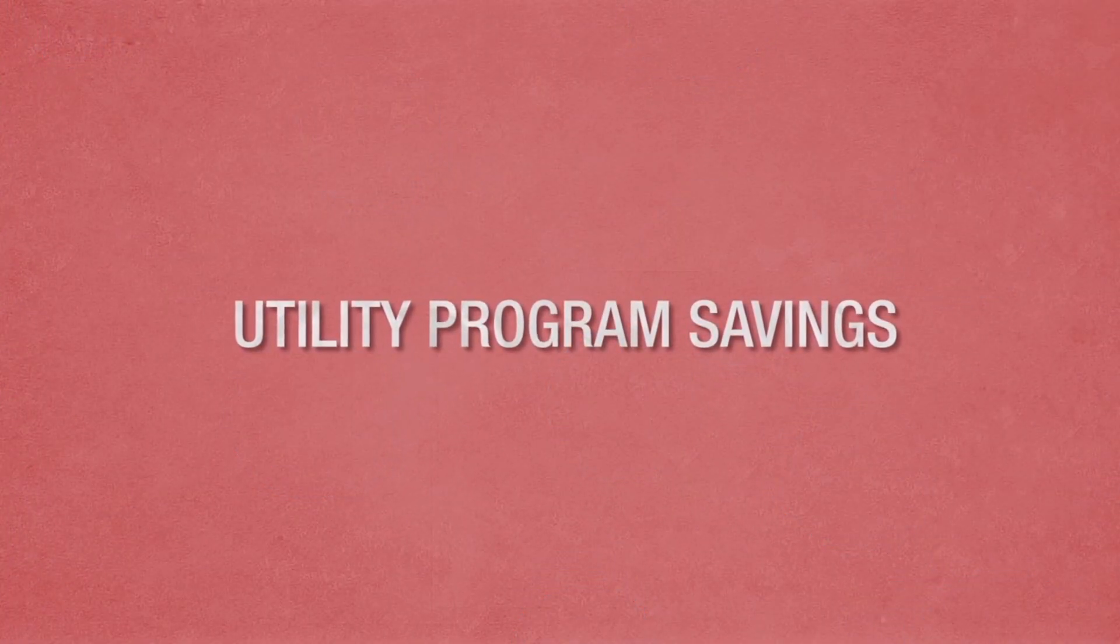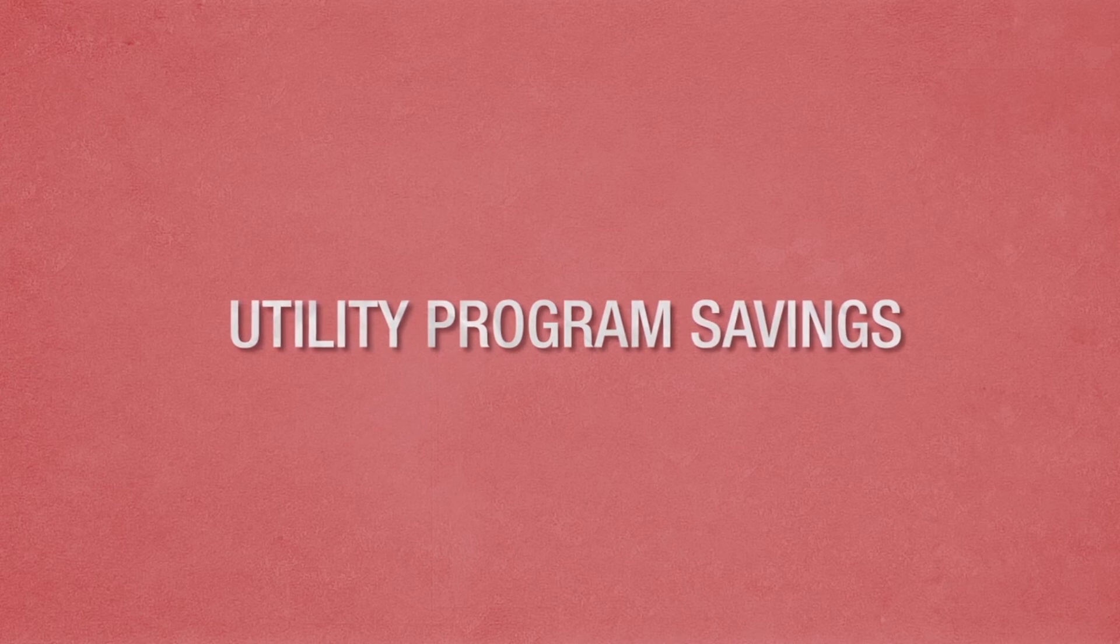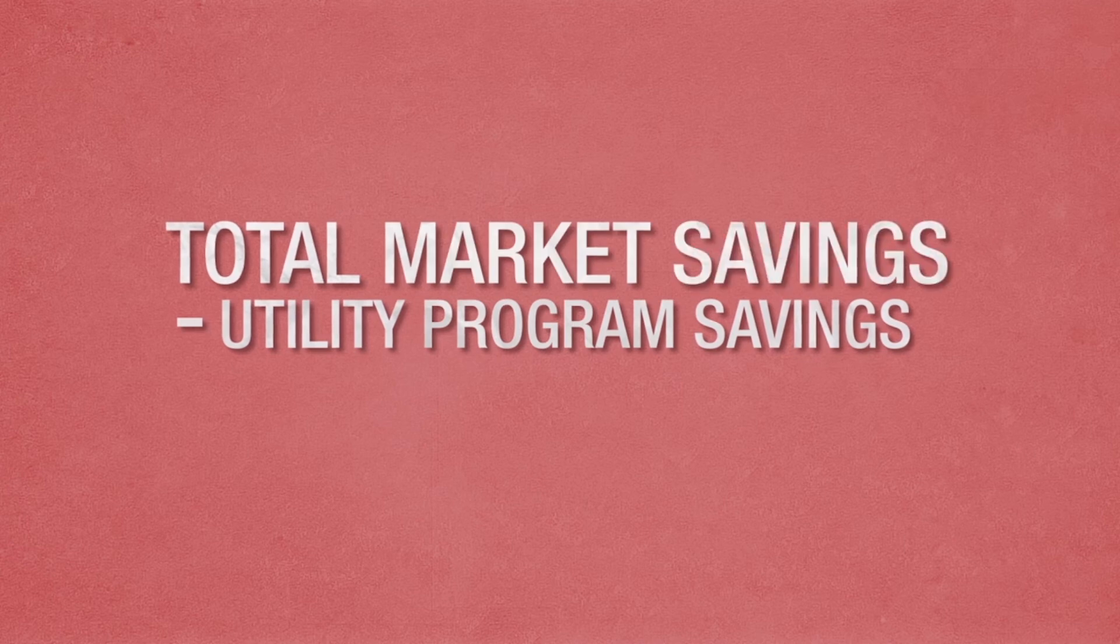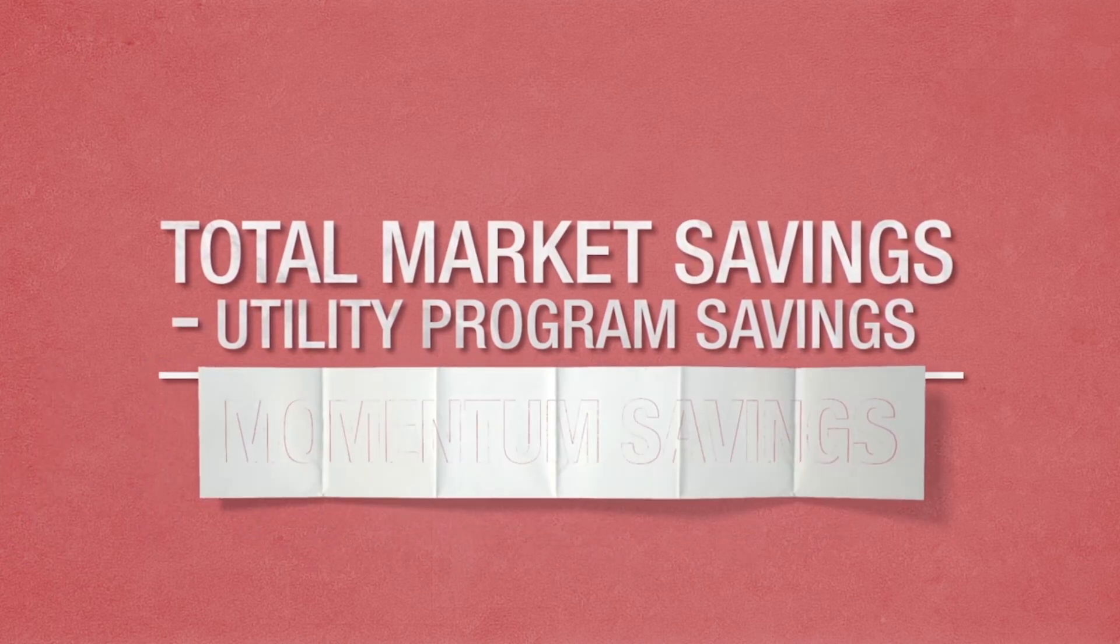We do this by adding up the savings from direct utility incentives and retail programs, and then subtracting these from total market savings. What remains are momentum savings.